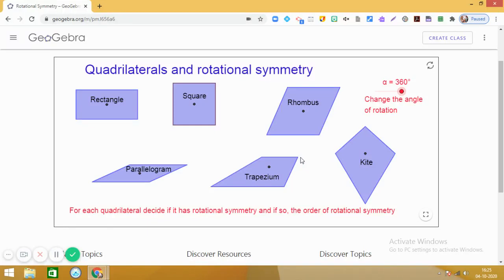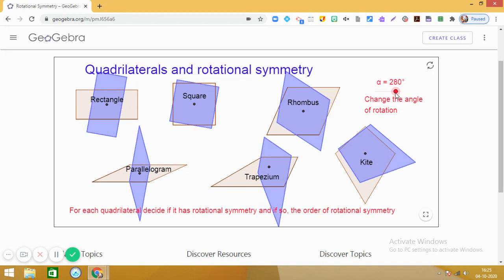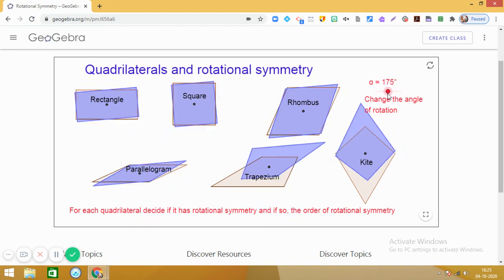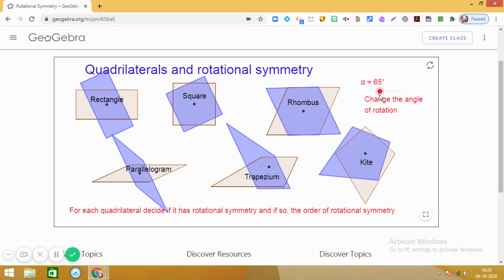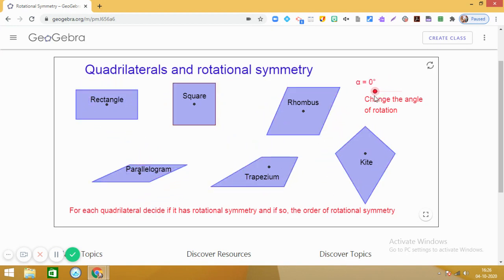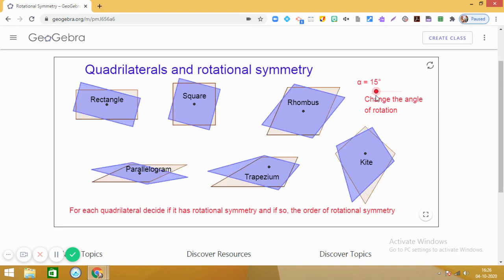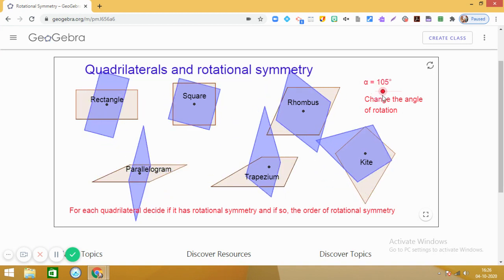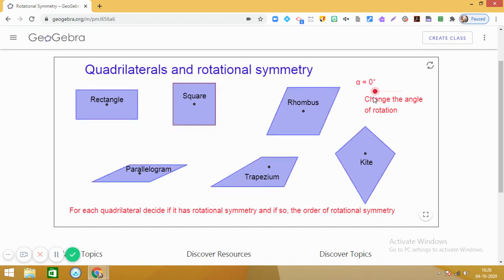And in this experiment, we have found that kite has no angle of symmetry. Trapezium has no angle of symmetry. It has no rotational symmetry. But we found the rhombus, parallelogram and rectangle two times, we found the same shape. So, we conclude that rectangle, parallelogram and rhombus, they have rotational symmetry with angle of rotation 180 degrees.